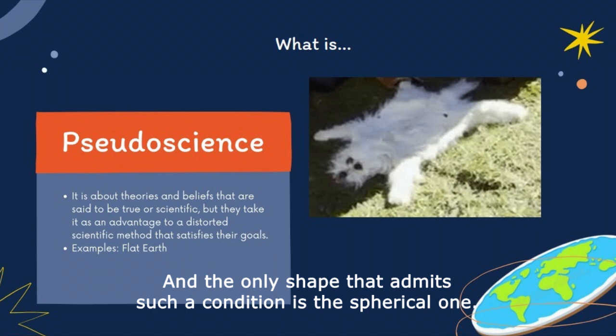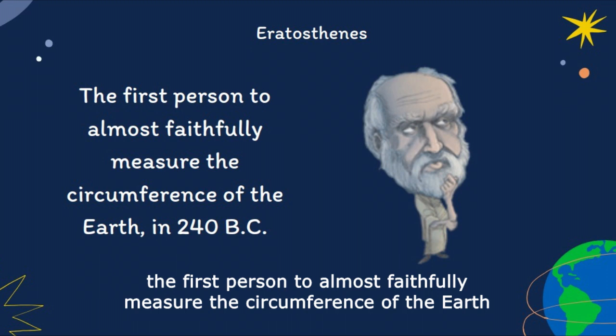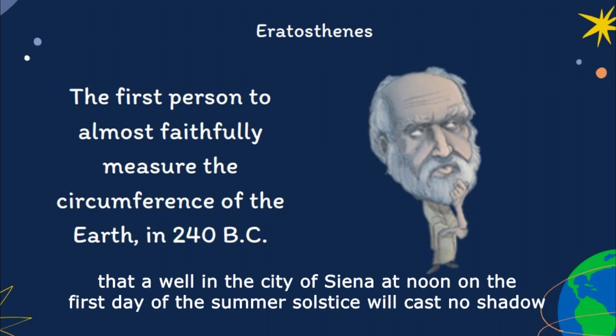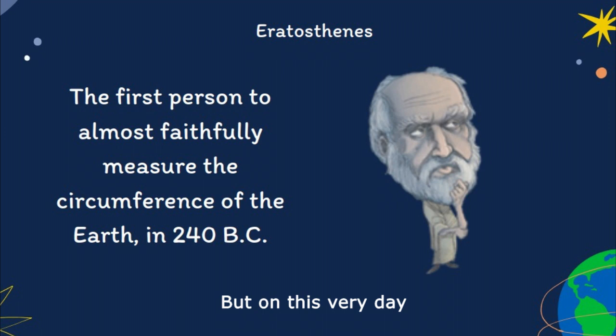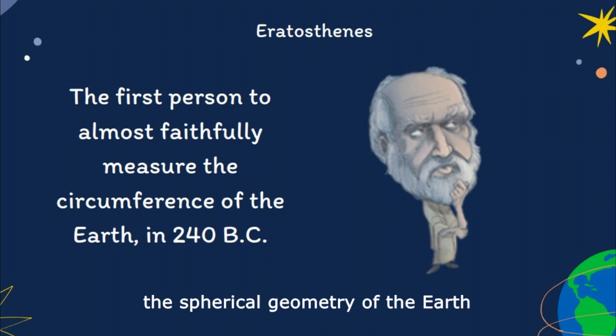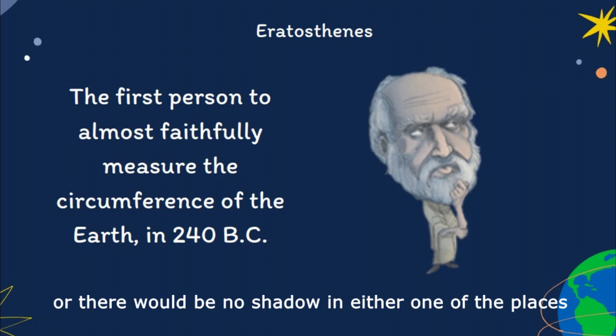Another observation which contradicts flat Earth theory was made by Eratosthenes, the first person to almost faithfully measure the circumference of the Earth, in 240 BC. While in the library of Alexandria, he read from an ancient parchment that a well in the city of Syene, at noon on the first day of the summer solstice, would cast no shadow. But on this very day, at this very hour, the Tower of Alexandria cast a measurable shadow. This led him to the hypothesis that the spherical geometry of the Earth was responsible for the difference in observations — if the Earth were flat, either there would be shadow in both places, or no shadow in either.